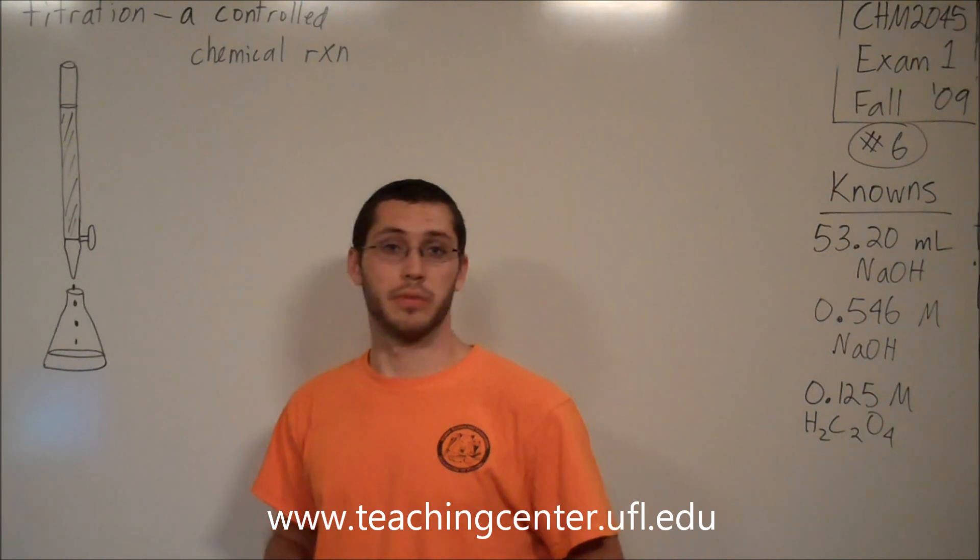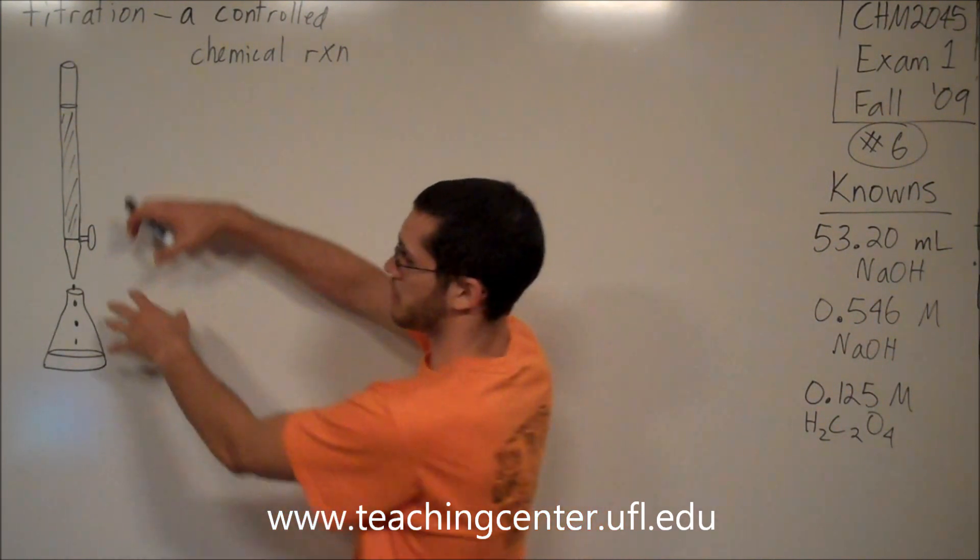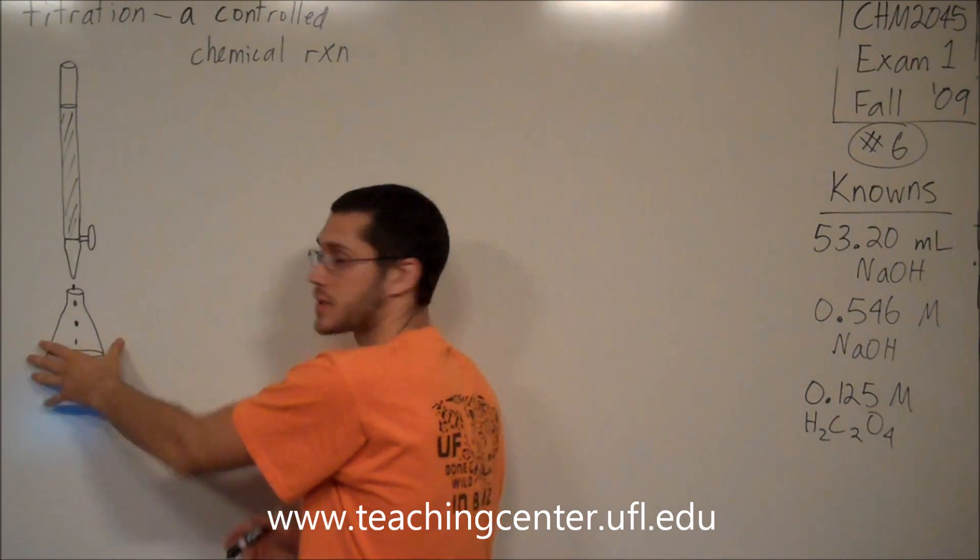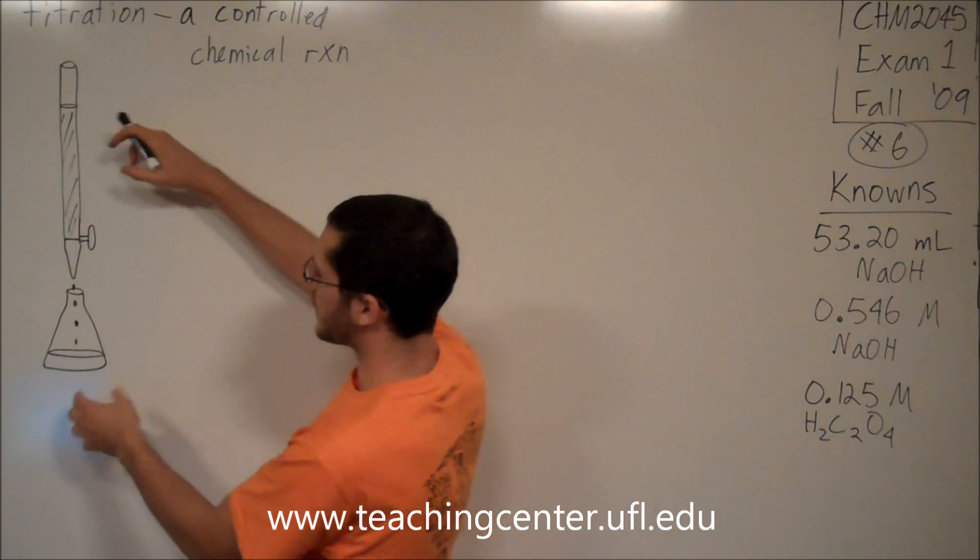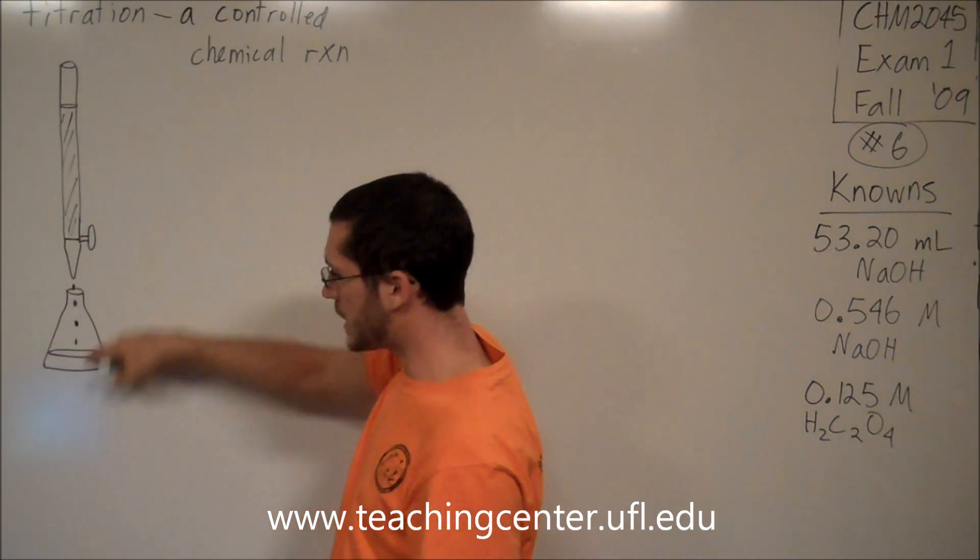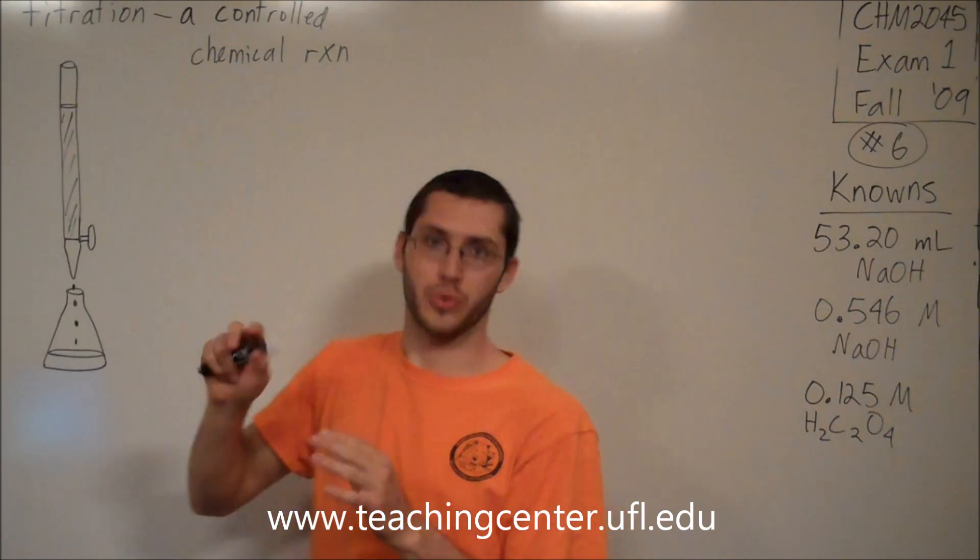Titration, in very simplified terms, is a controlled chemical reaction. We're going to separate our two chemicals, one in a burette up here and another in an Erlenmeyer flask. And then we're going to let the two chemicals come together. We're going to drip the chemical in the burette into the Erlenmeyer flask, drop by drop, and that way we can control the reaction.